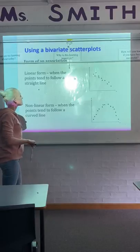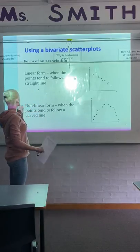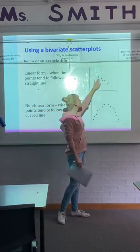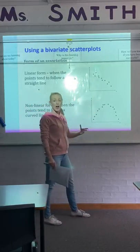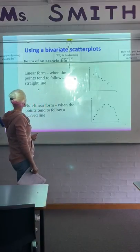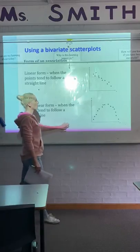So the first thing is the form of an association. There are two forms. We have linear form where the dots roughly form a straight line or a linear line, or we have a non-linear form when the points tend to follow a more curved line.